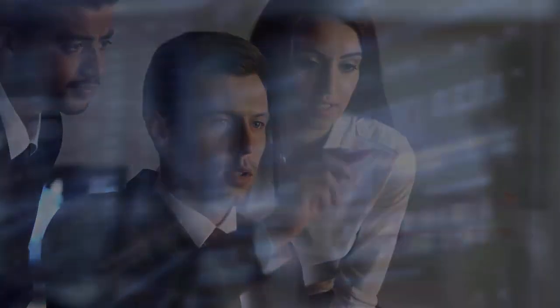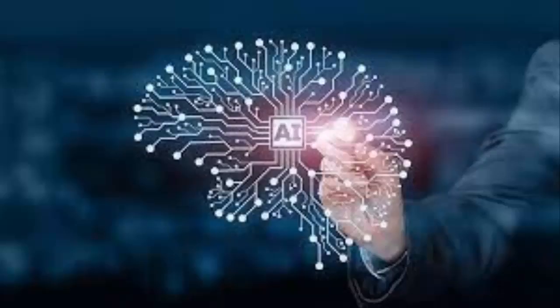AI technology has the potential to transform various industries and change the way we live and work. However, there are also concerns about the ethical implications of AI, including issues related to privacy, bias, and job displacement. As such, it is essential to consider the potential benefits and drawbacks of AI technology and to develop responsible AI practices to ensure that AI is used for the betterment of society.